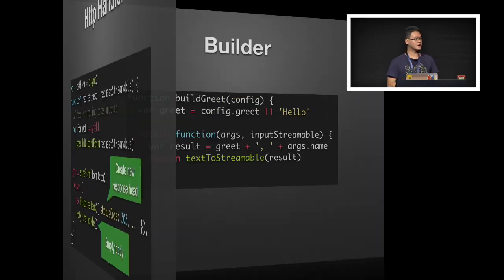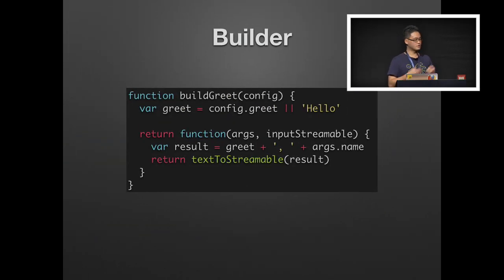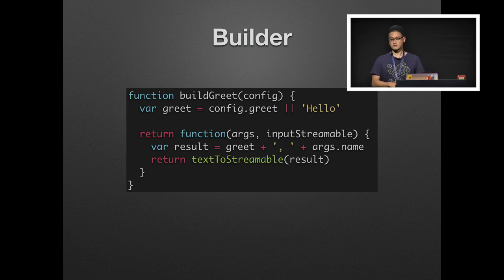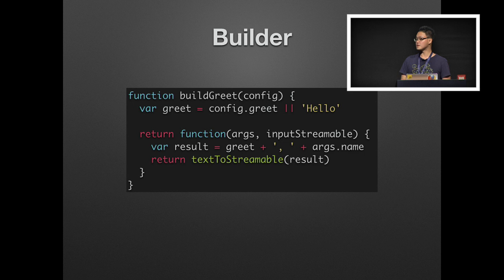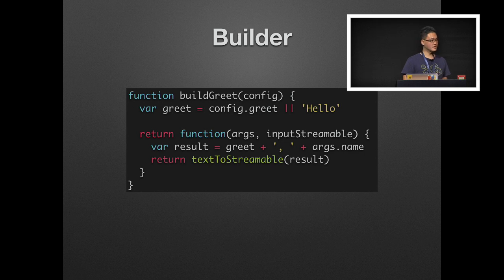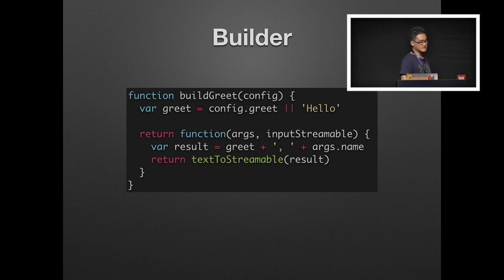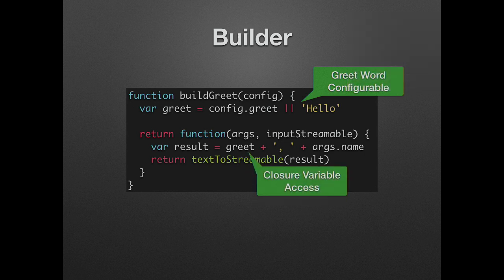On top of handlers, Quiver also has a simple solution to solve the dependency management problem. Using the builder construct, a builder is simply a function that accepts a config plain object and returns a handler function. And using that, a builder can capture configurations such as a greet word in this case, and then return a function that can capture the greet word in the form of a closure variable.